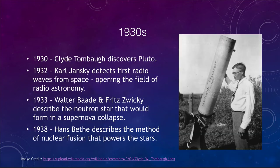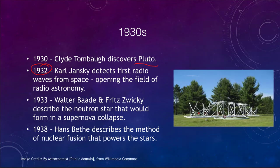Moving into the 1930s, the first discovery was in 1930 when Clyde Tombaugh discovered Pluto, which was then considered the ninth planet. It was detected by a very careful search for an object beyond Neptune. A couple of years later in 1932, Carl Jansky brought us the beginnings of radio astronomy — he detected radio waves from the center of our galaxy, opening up a whole new field. Before 1932, all astronomy was done through visible light; now we could look at radio waves from space as well.